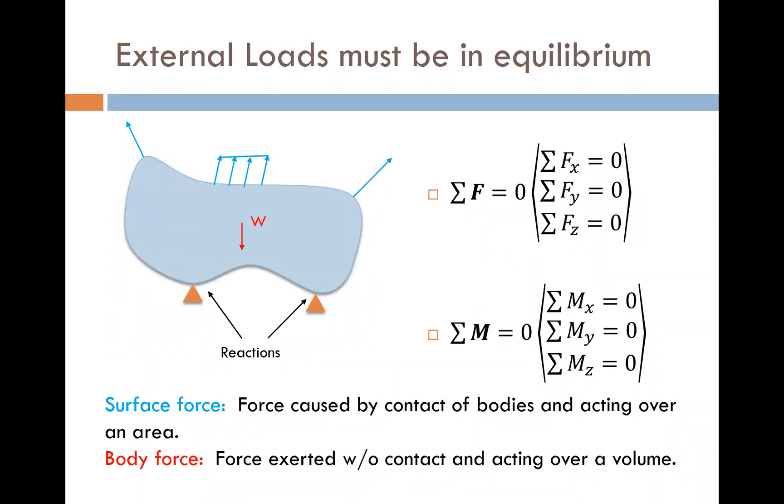The very first concept that we need to remember is that all of our external loads must be in equilibrium. So when we look at a body, for example the one shown on the screen, we have two different types of applied loads. In blue, on the outside of the body, those are what are called surface forces. These are forces that are caused by contact of bodies acting over an area. So we have forces acting on the surface of an object.